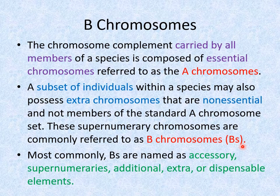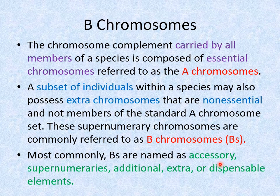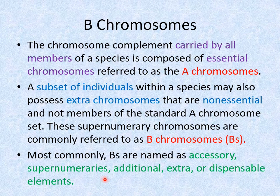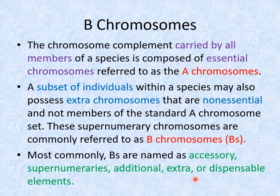Other names used for B chromosomes include the accessory chromosomes, the supernumeraries, the additional chromosomes, or the extra or dispensable elements.